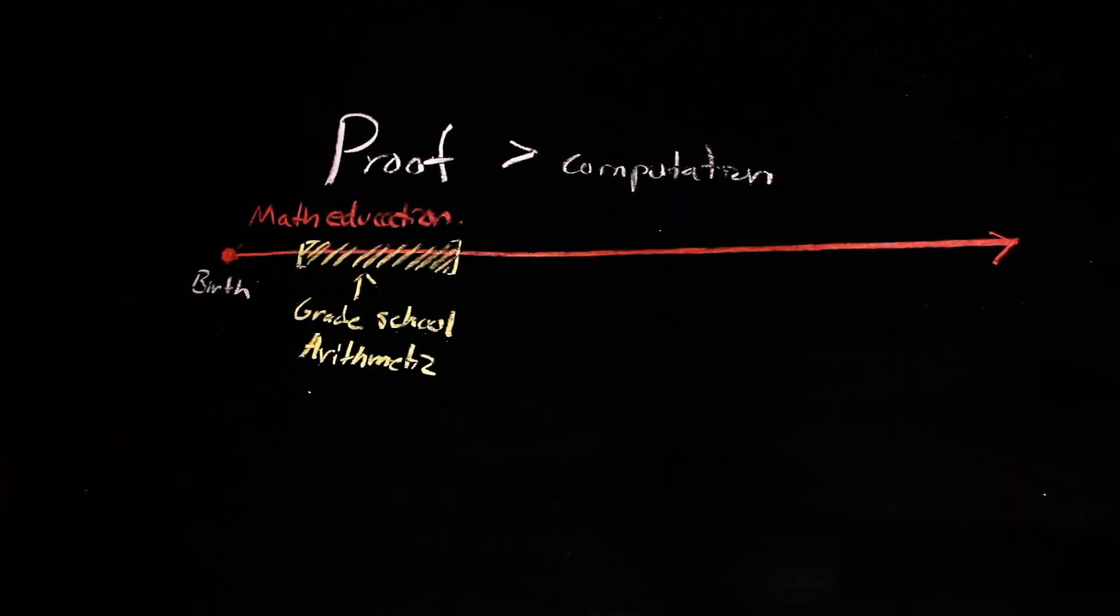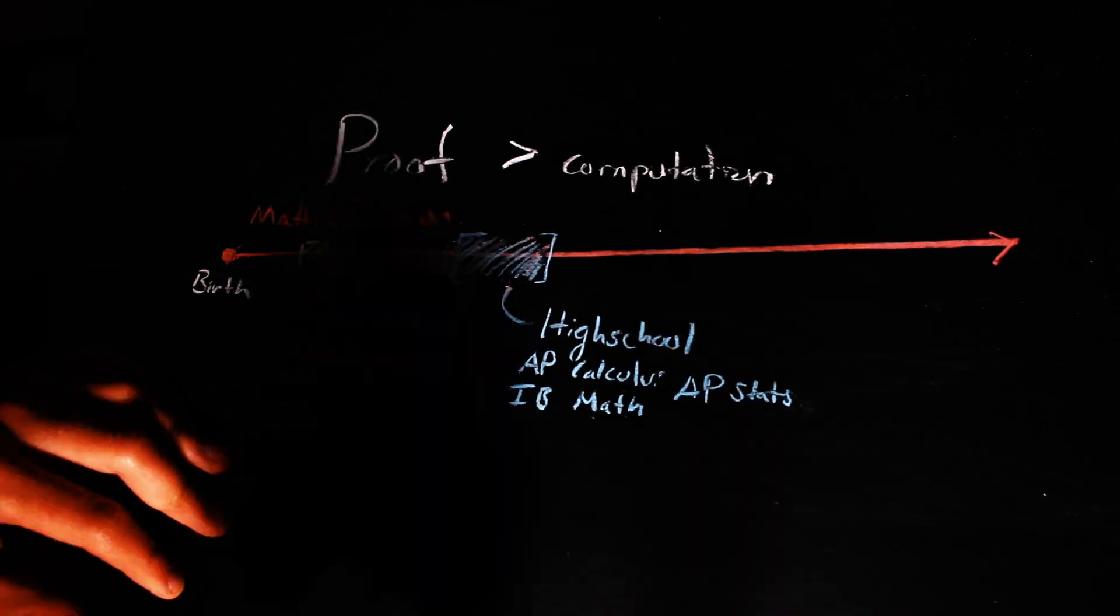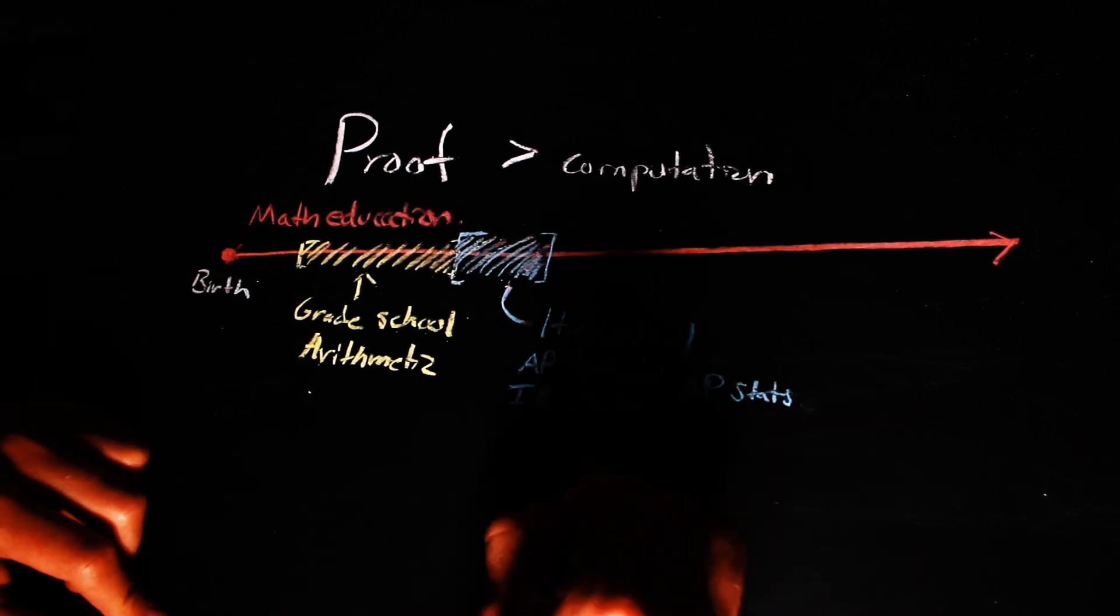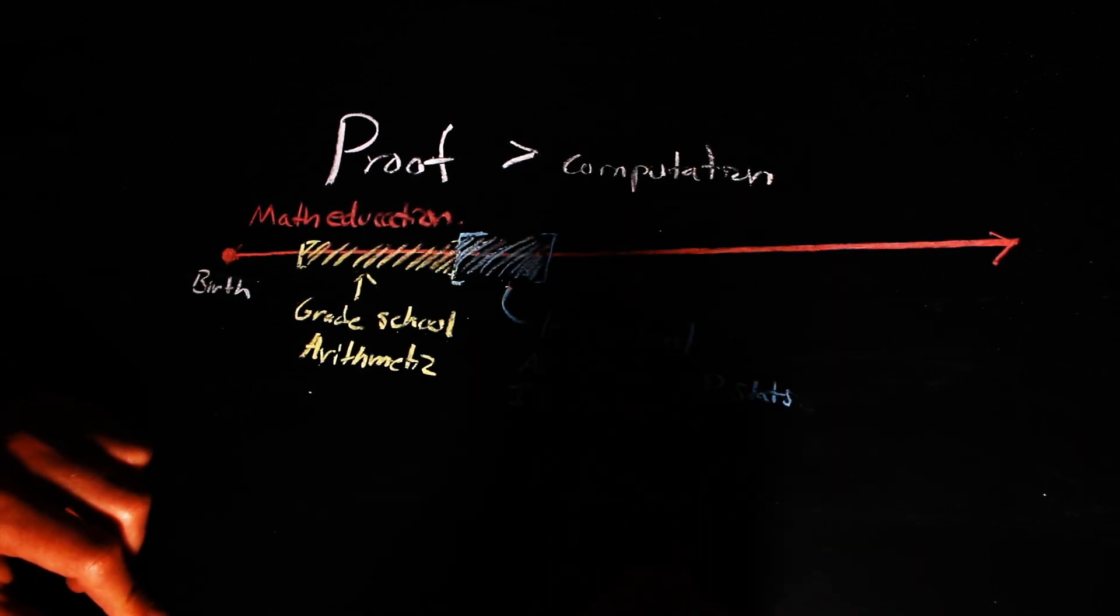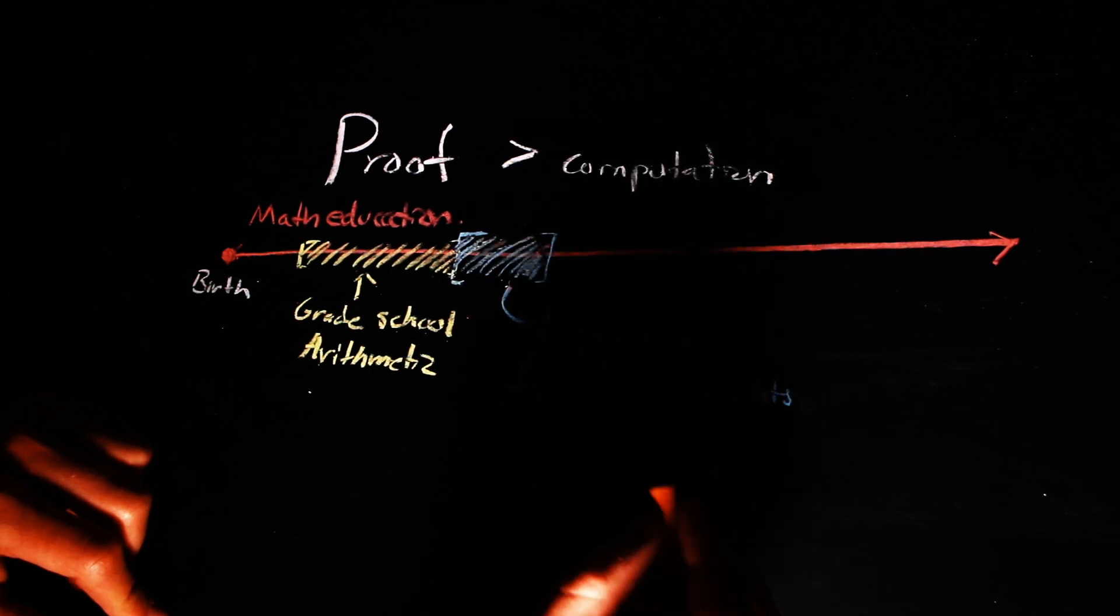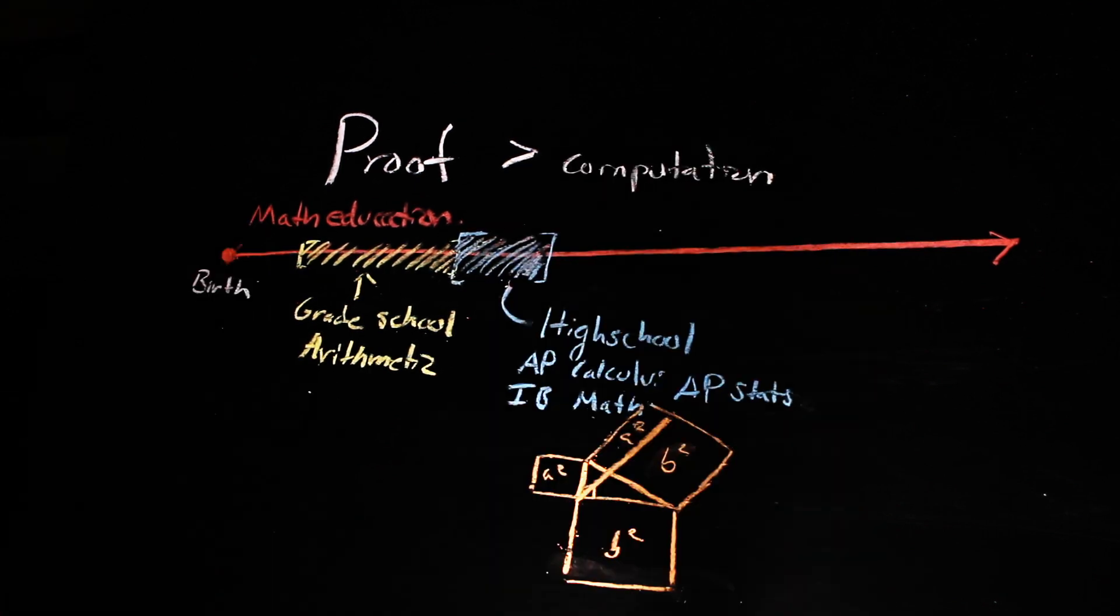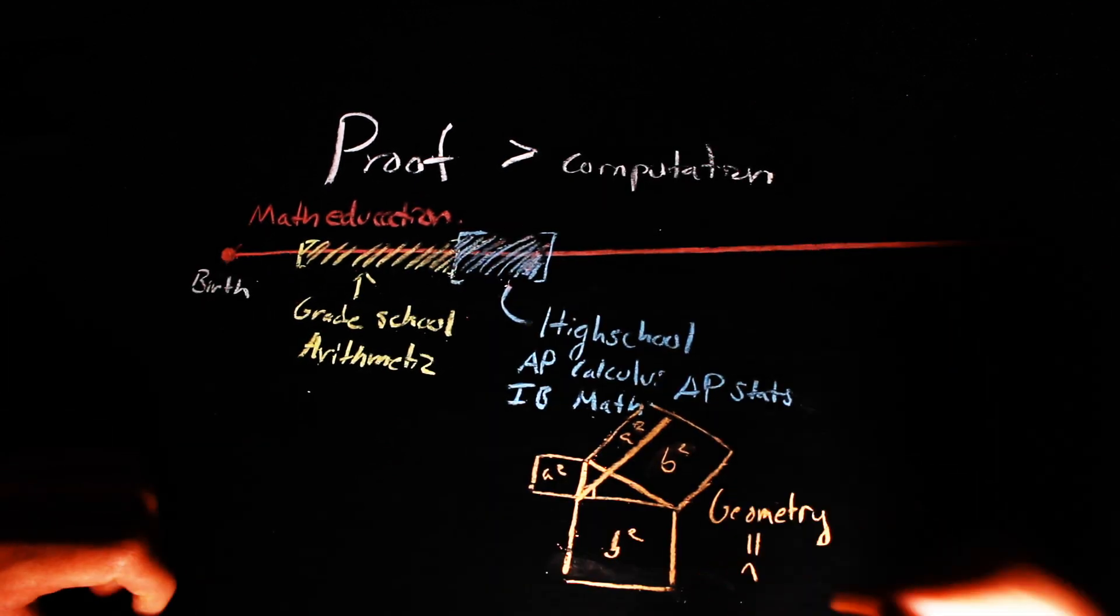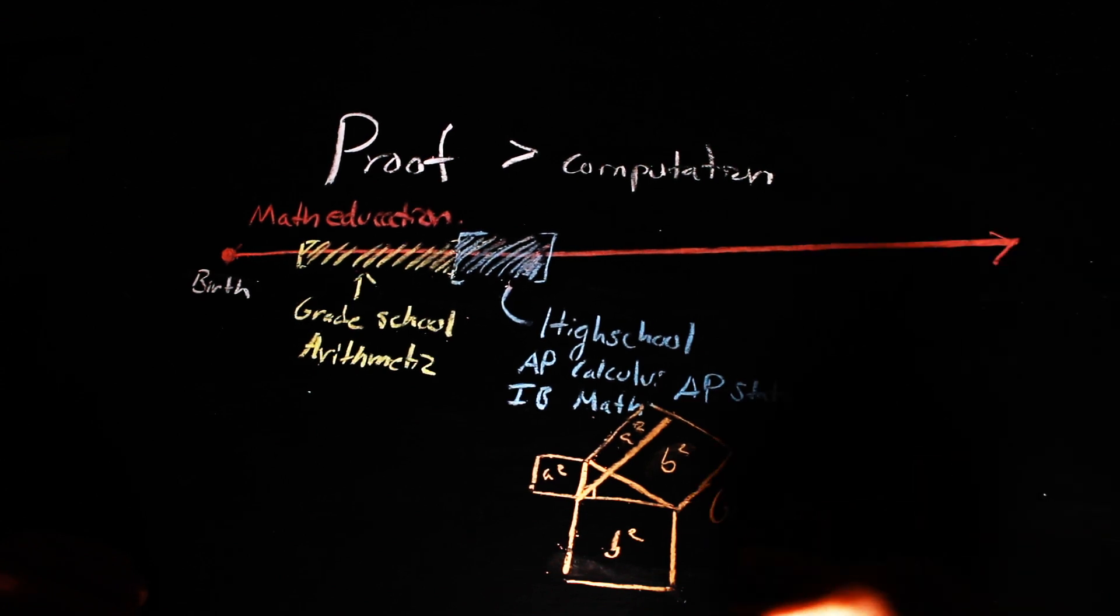Many American universities only grant credit for calculus and statistics for IB and AP programs, but both of these courses tend to veer away from proofs, favoring computations. Although some high schools in the U.S. develop geometry in an axiomatic way, understanding of these proofs does not translate to literacy of mathematics in general.